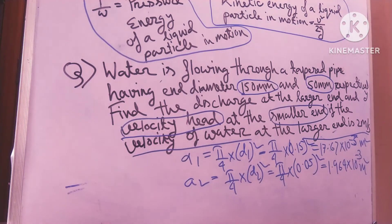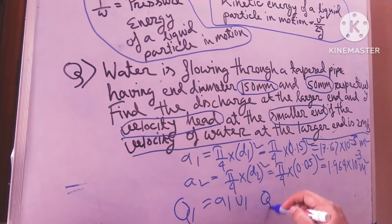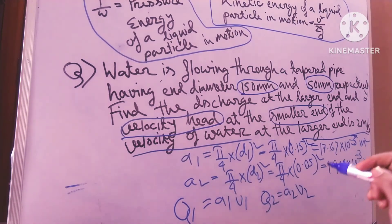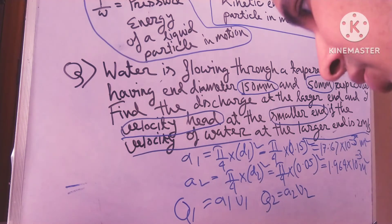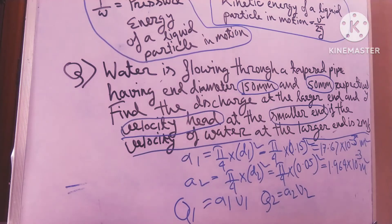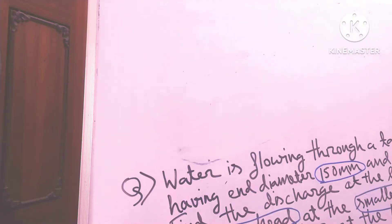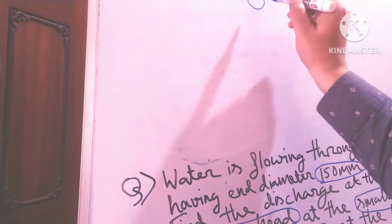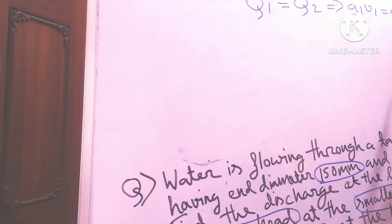Now friends, we discuss Q1 equals A1 V1 and Q2 equals A2 V2. This rule is for cross-sectional areas — discharge through the pipe is continuous. The flow is not turbulent, hence Q1 equals Q2, which means A1 V1 equals A2 V2.